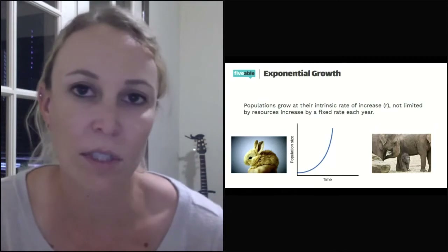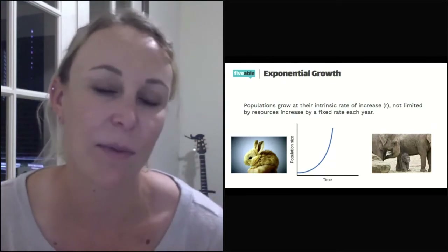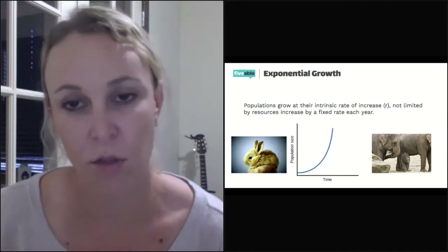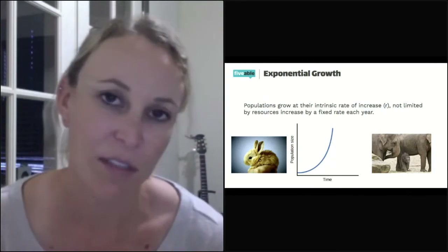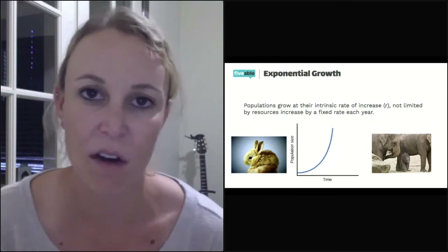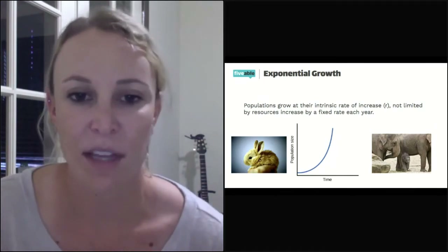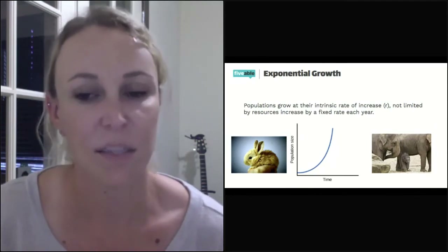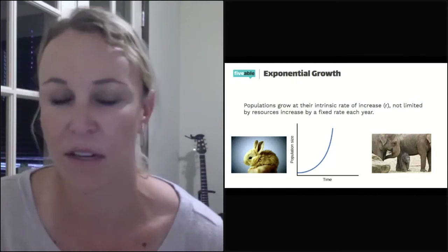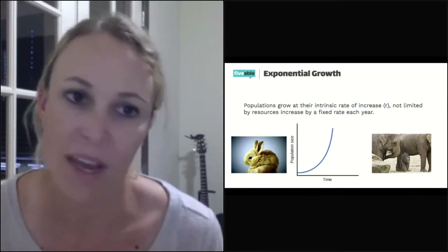Elephants, by contrast, don't begin to reproduce until they're 10 to 15 years old and may have a total of about five babies in their lifetime. So the intrinsic rate is going to be different for every single animal. Our last presentation talked about K and R selected reproduction — the rabbit is R-selected and reproduces very quickly, while K-selected reproduction is much slower. This is when there's nothing slowing them down: enough food, nothing hunting them — that is exponential growth.